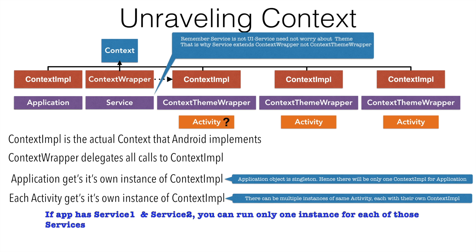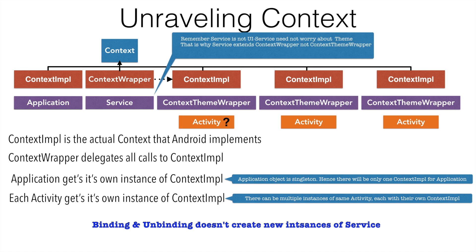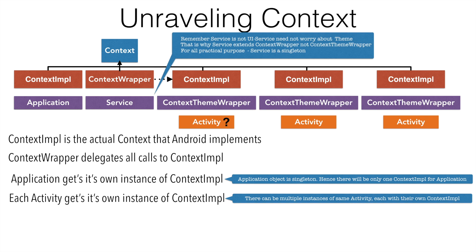If you recall the behavior of the service, you can have only one instance of a particular kind of service. Once a service is started, you can only bind and unbind from that particular service. So even though an application can have multiple services, there can be only one single instance of each service. For all practical purposes, a service is a singleton. So when a service gets instantiated, Android provides it with a context implementation, and no matter how many times you bind or unbind, there can be only one context implementation per service in an application.